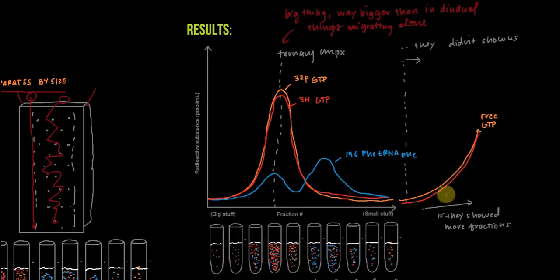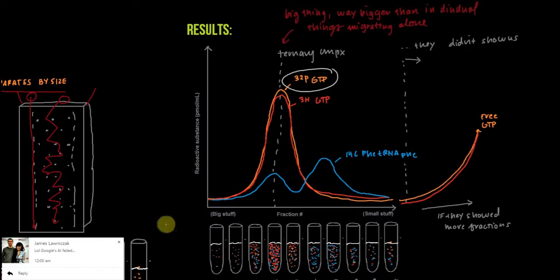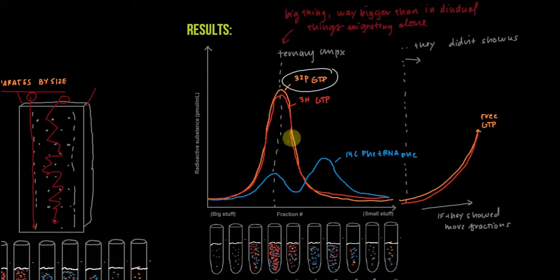So what can we conclude from this data? Well, this data shows that GTP, both labels, and some phenylalanine tRNA phenylalanine co-migrate, and that they co-migrate larger than what you'd expect for just phenylalanine bound to GTP. So this must be a ternary complex, and both GTP and phenylalanine tRNA are in this complex. Also, you can conclude that GTP in this complex, there at least is some GTP that's non-hydrolyzed, because the 32P label is still retained at a relatively high concentration. But you cannot conclude that GDP isn't also involved in this complex.